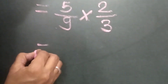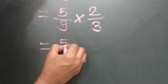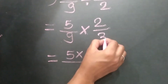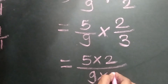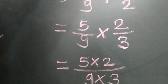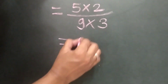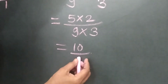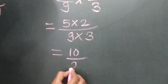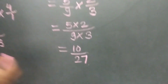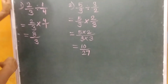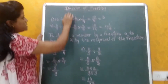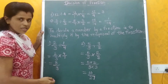The reciprocal of 3 upon 2 is 2 upon 3. So we get 5 multiplied by 2 and 9 multiplied by 3, which gives us 10 upon 27. So this is the division of fractions.